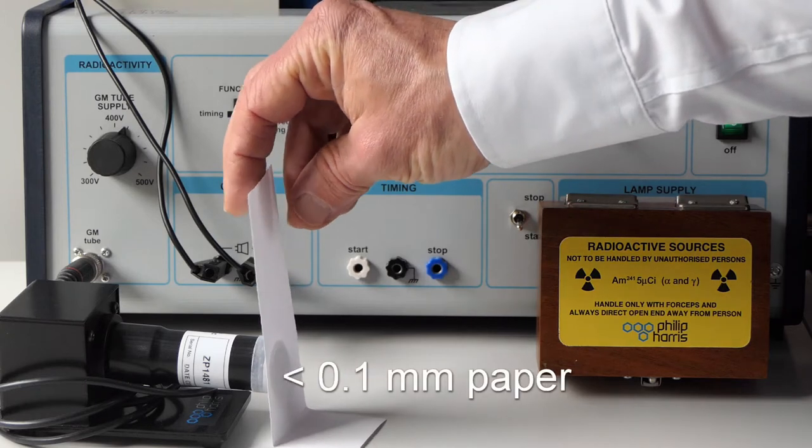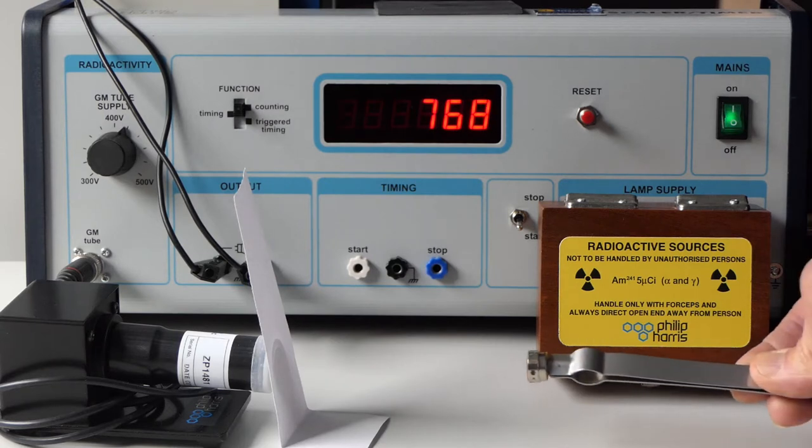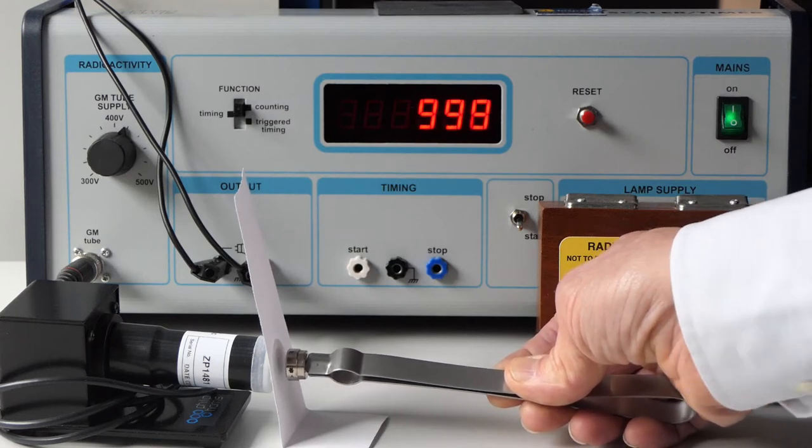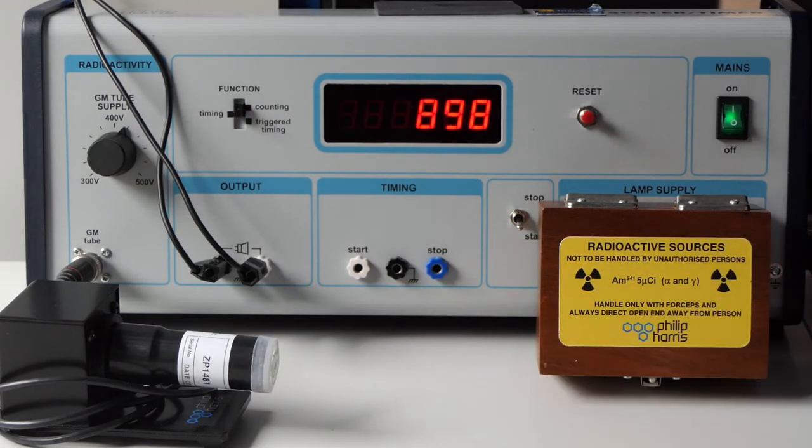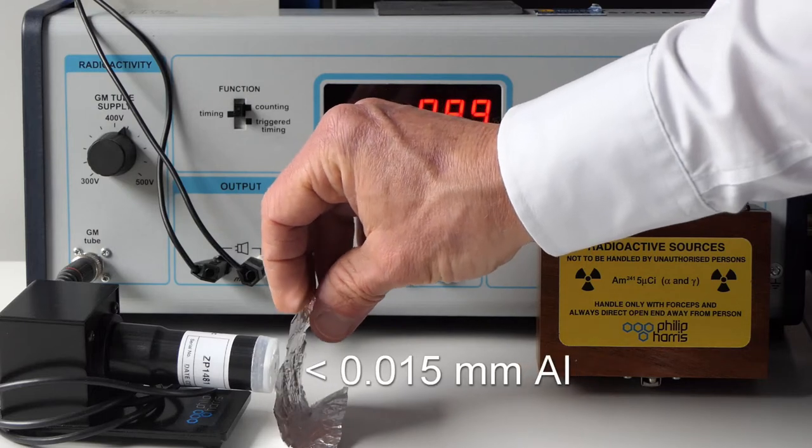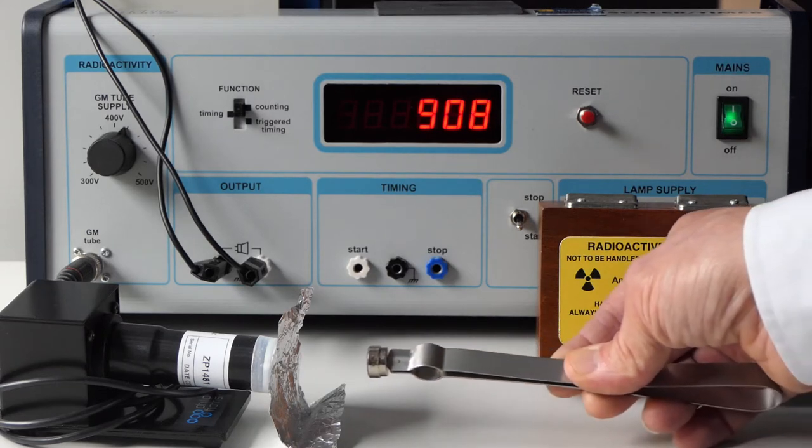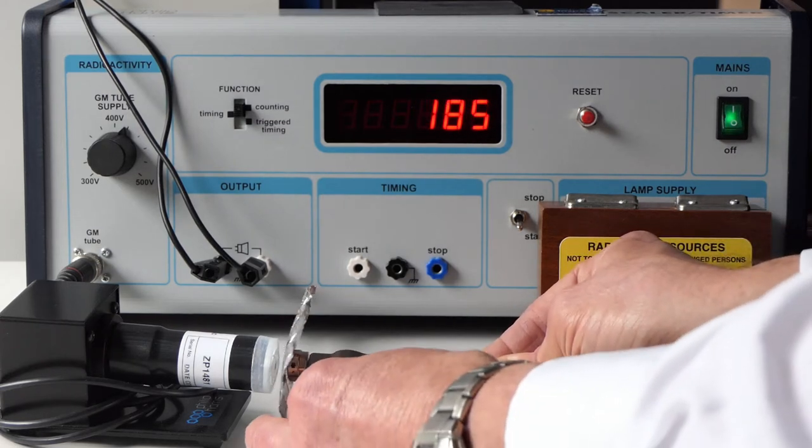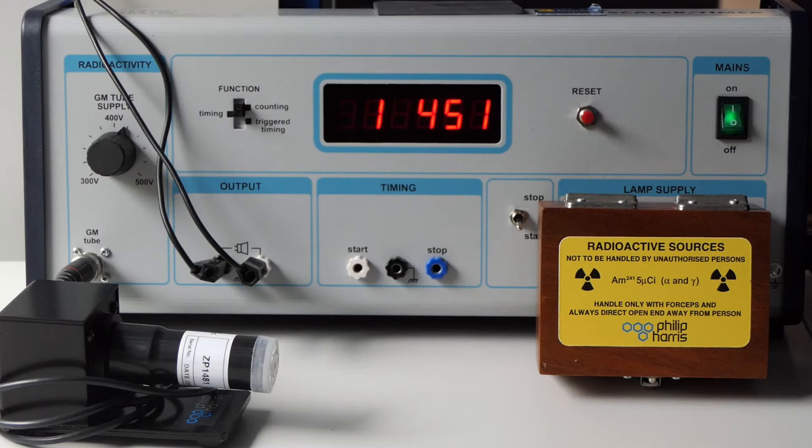We'll try and block them using a piece of paper, and next we'll try some aluminum foil, and finally some thick lead.